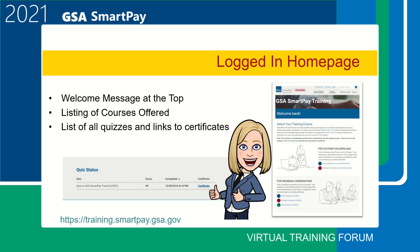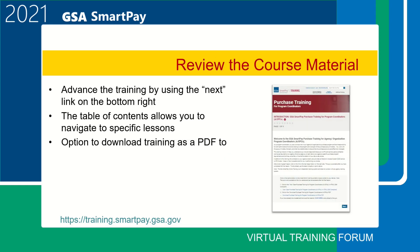Now you have an account. You know you are successfully logged in when you see a welcome back message near the top of the screen and 'My Account' is a clickable item on the top navigation menu. If you have taken online training before, you will also see a list of your quizzes and a link to the certificate under the listing of courses offered. This is a homepage shortcut for your certificates if you need to view, download, or print. Before you can take the quiz to get the certificate of completion, you will need to review the course material, which is updated periodically to ensure customers are trained on the most up-to-date information.